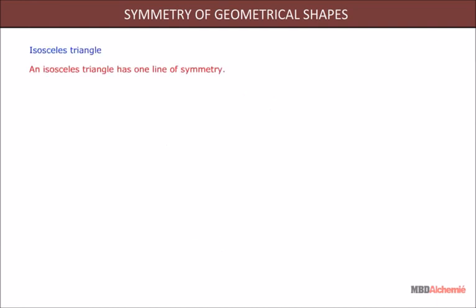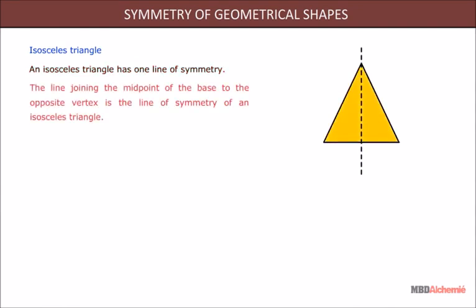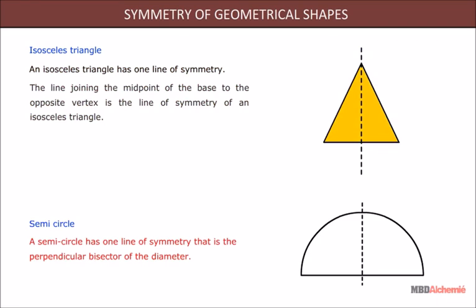An isosceles triangle has one line of symmetry. The line joining the midpoint of the base to the opposite vertex is the line of symmetry of an isosceles triangle. A semicircle has one line of symmetry, i.e., the perpendicular bisector of the diameter.